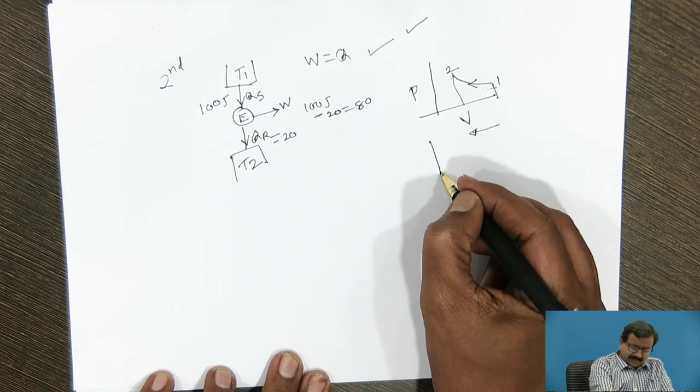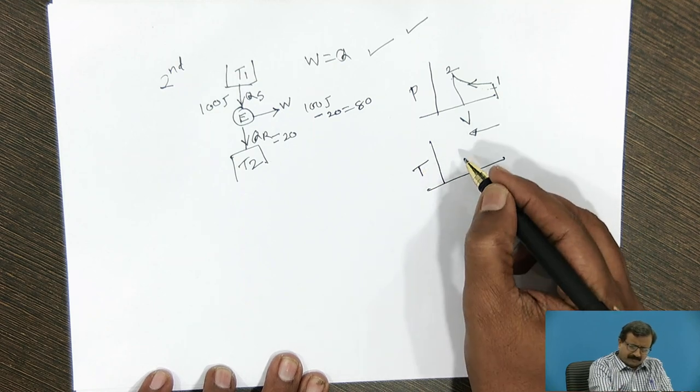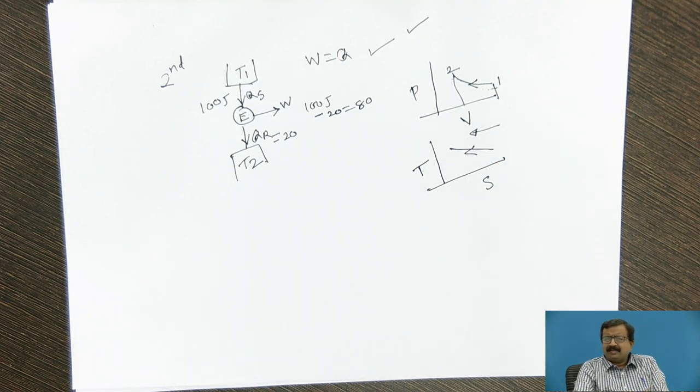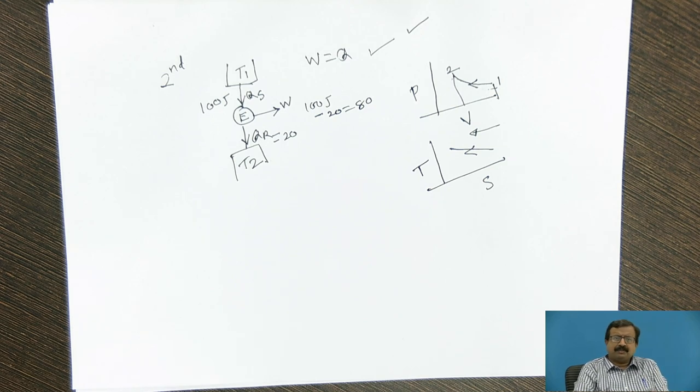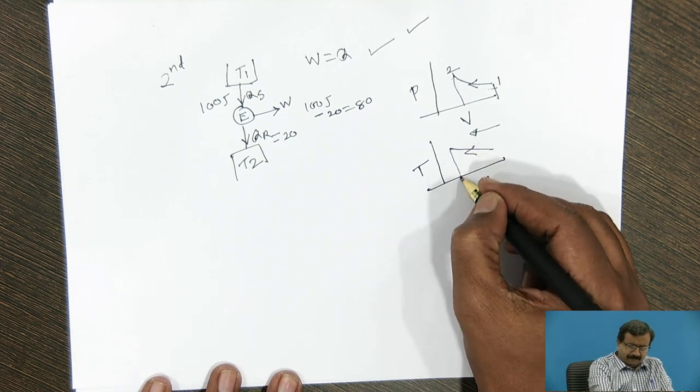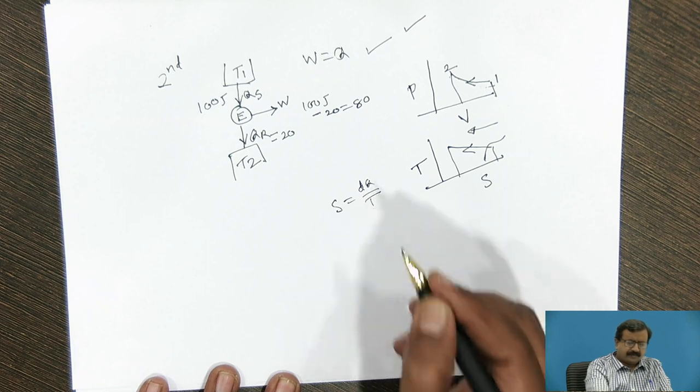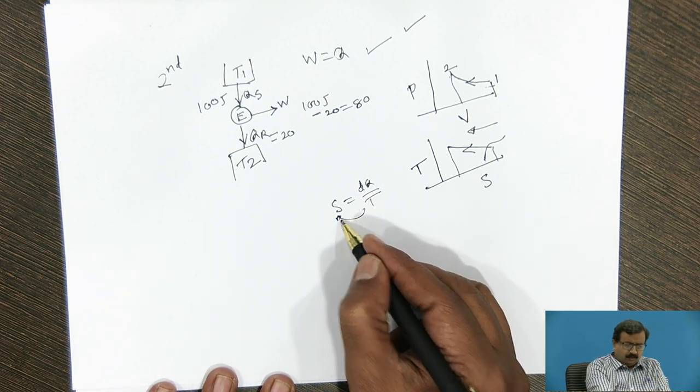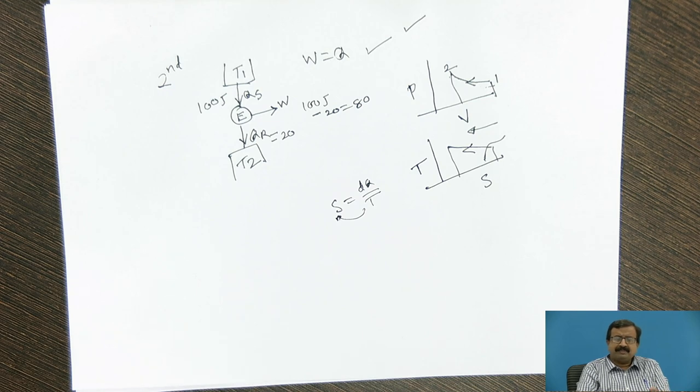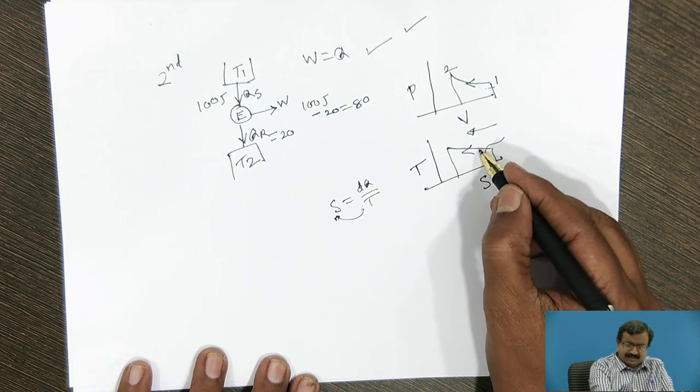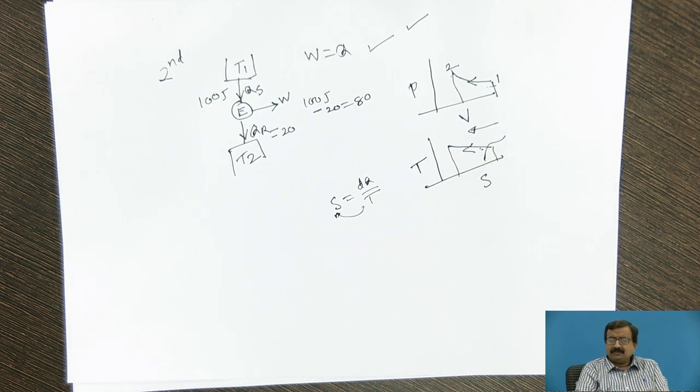Whenever I have this TS diagram, for example, and if I say I have any process like this, it is not a standard process because standard process is either constant temperature, constant entropy, constant volume, constant pressure or some other parameter that I keep constant. Now the question is, area under this diagram, you know by definition what is S? It is DQ by T. So if I multiply this T into S, what I get is DQ. So it represents the energy interaction. Now this represents energy interaction only when this process is reversible. So Carnot took advantage of this particular concept while developing the heat engine.